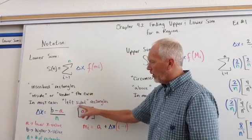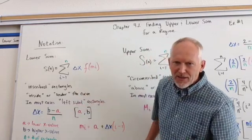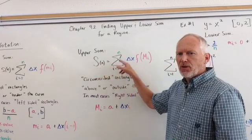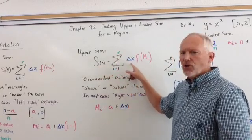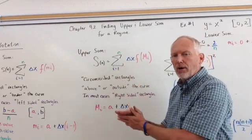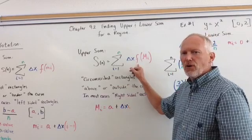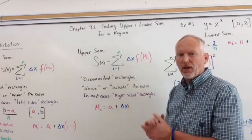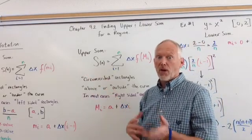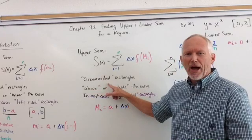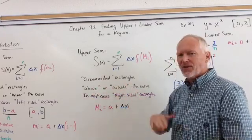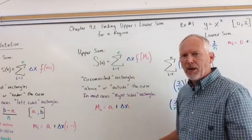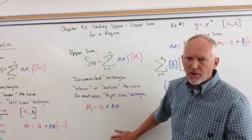If we want an upper sum, now we're going to deal with capital S of n equals the sum of i equals 1 of n times the change in x. How wide are your rectangles that you're making, times the function of m sub i, capital M sub i now. So that indicates that you are doing an upper sum. Clever, weren't they, with lower lowercase, upper uppercase. These are circumscribed rectangles, so that means they're above or outside the curve. And in most cases, these are right-sided rectangles, and that M sub i equals a plus the change in x times i, or in the i-th term.